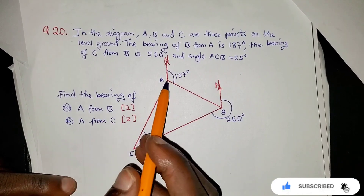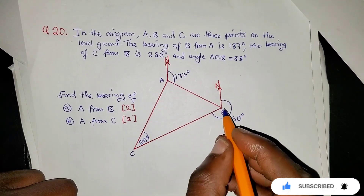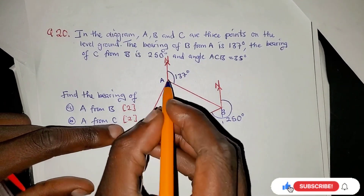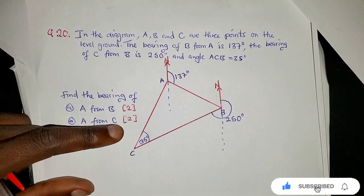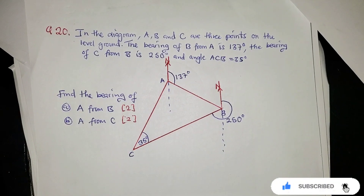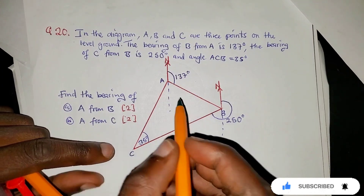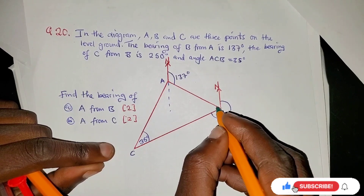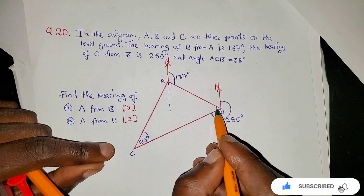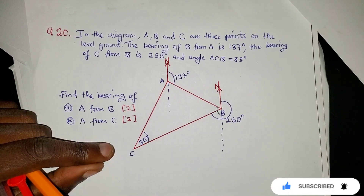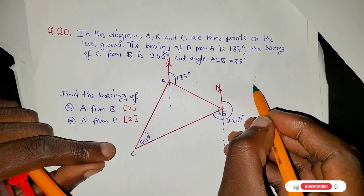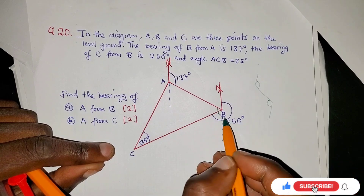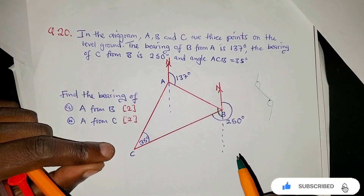To find the bearing of A from B, let's extend the north line so we can discover something useful. Using a different color, we can see that this angle of 137° here is equal to this angle on the other side — these are alternate angles. So even here the angle is 137°.